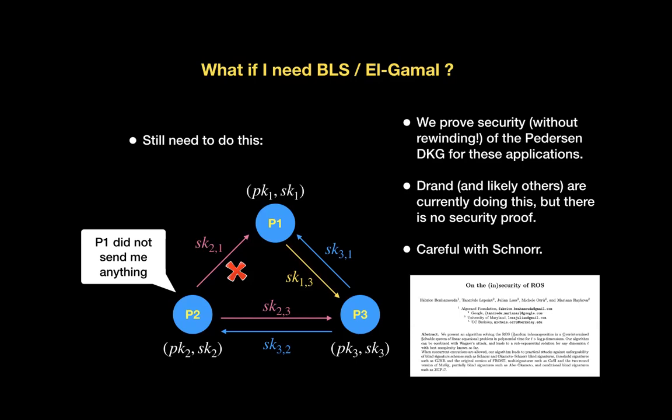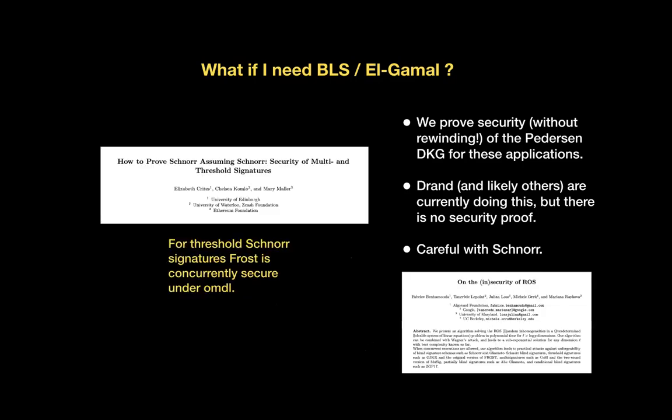With Schnorr threshold signatures you need to be careful. There are fairly old results in the literature that have been broken to the point where they can be broken in seconds by a concurrent adversary. We have also shown that some newer schemes in the literature, namely FROST, is concurrently secure under the one-more discrete logarithm assumption. This paper uses proving techniques very similar to those in this work, though in that paper there are also programmable random oracles in play, so it is not exactly the same but is inspired by it.